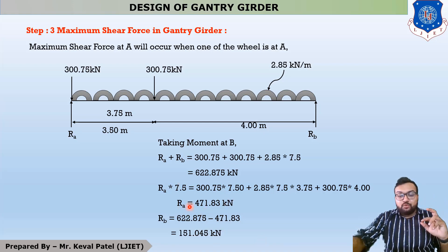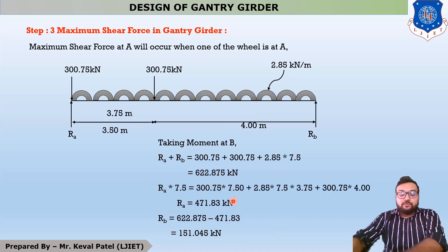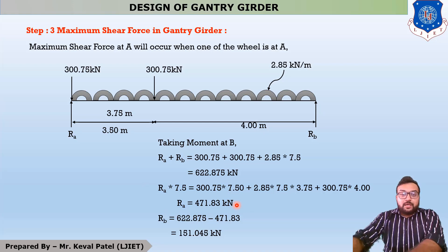You have to design your gantry girder for the maximum reaction, so you have to design for 471.83 kilonewtons.